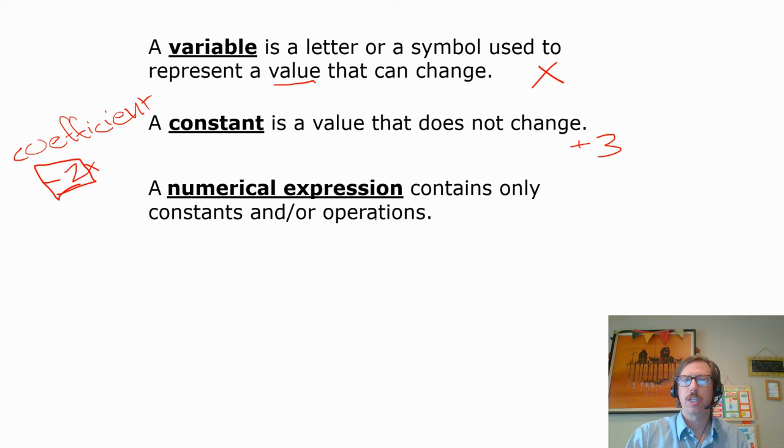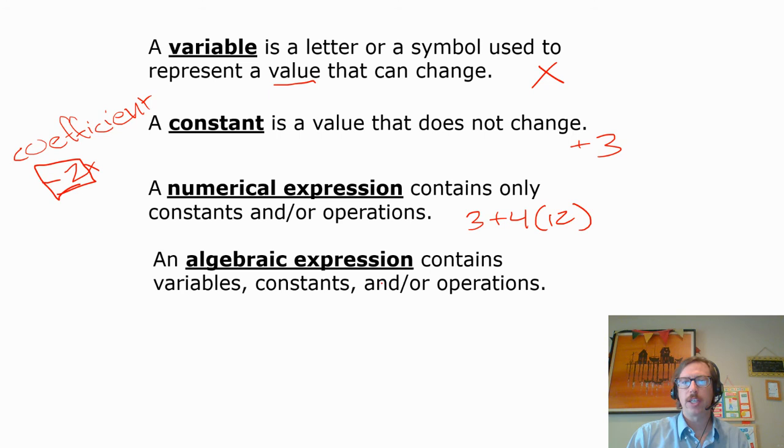A numerical expression contains only constants and operations. So that would be an expression just with like 3 plus 4 multiplied by 12. There are no variables there, so that would be a numerical expression. An algebraic expression would also contain variables. It can also have constant numbers like x plus 3. That would be an algebraic expression.